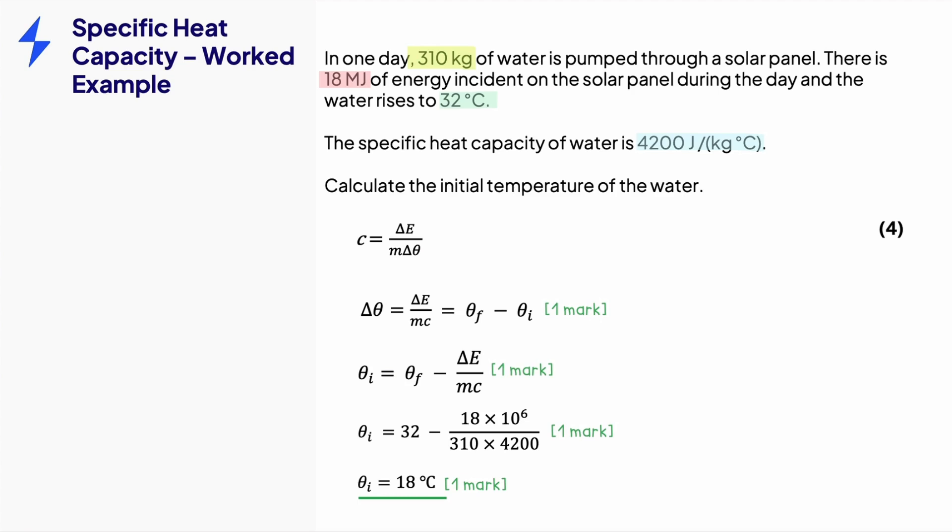Now, we need to do a couple of checks. The question states that the temperature rises to 32 degrees, so we need an answer lower than 32, which is what we have, so that makes sense. Also, notice they've said water, which has a freezing point of zero degrees, so we're not expecting a negative temperature either.